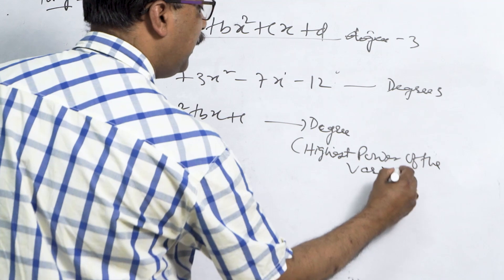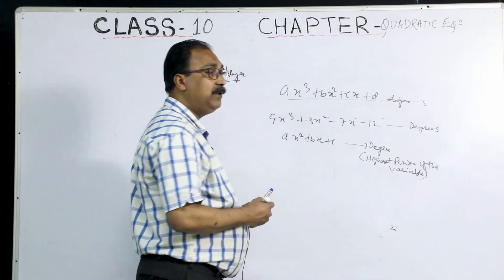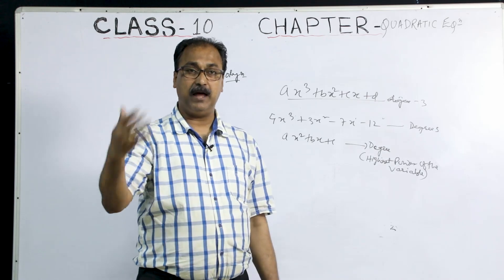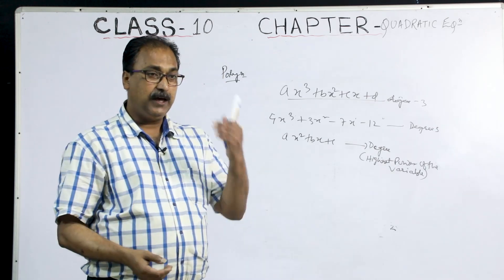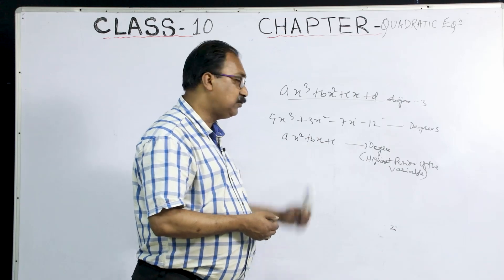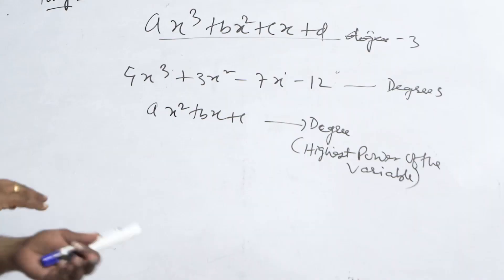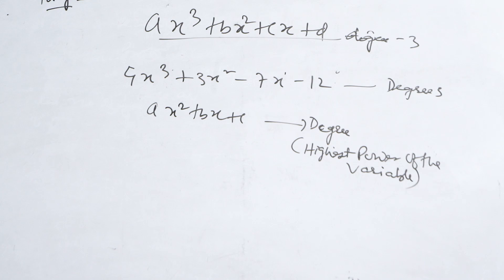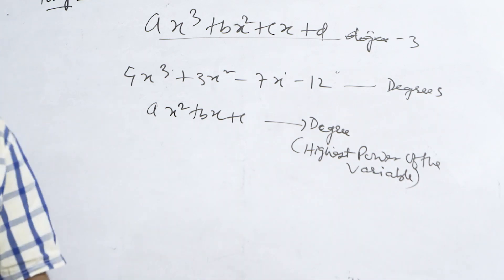What is a variable? That is the alphabet. Why are they variable? Because x can be changed as a number. If I say x equal to 2, x behaves like 2. If I say x equal to 3, x behaves like 3. So they are varying — variables are varying. That is why we call them variables.